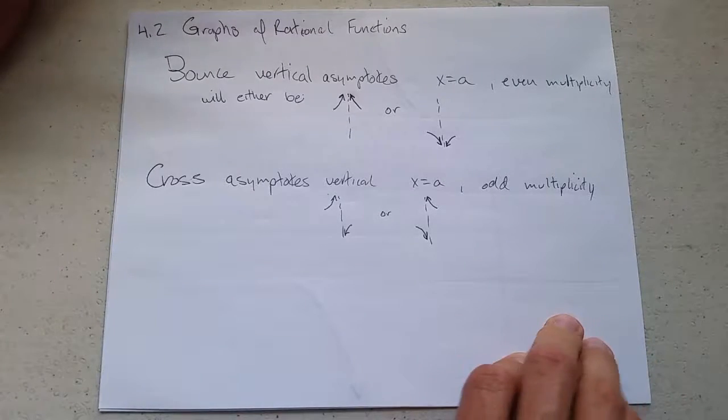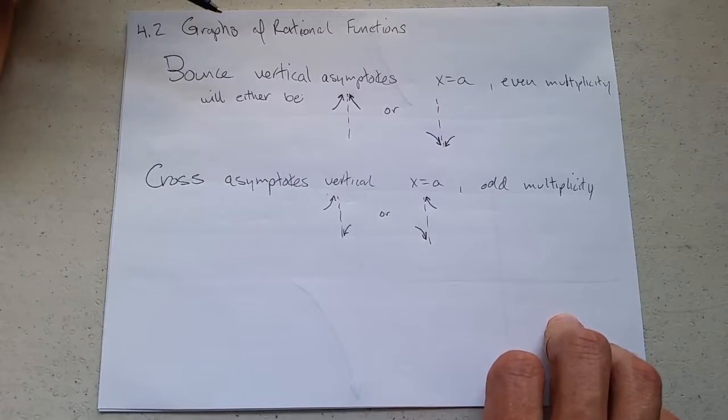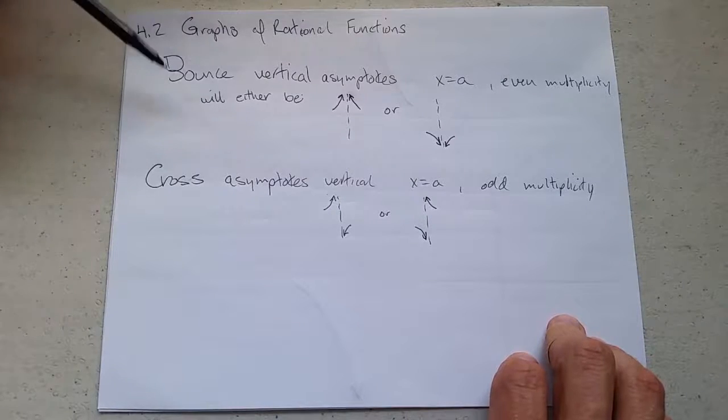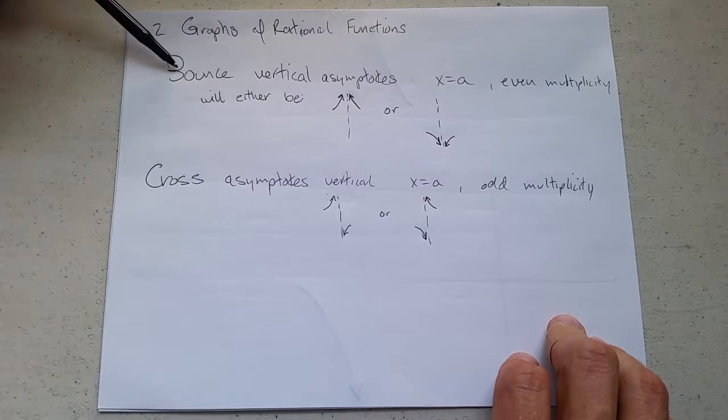Section 4.2 is graphing. There's not much to discuss before we get started with graphing. I'll reference bounce and cross asymptotes. What do they look like?